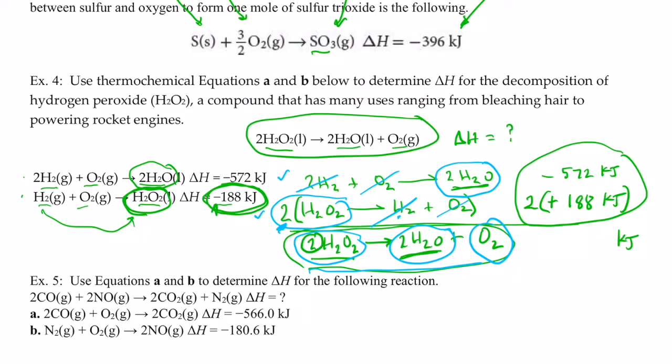So let's get our calculators out and add these two together. We have negative 572, and we're going to add to it two times positive 188. And when I do that, I end up with a negative 196 kilojoules for that reaction. So the heat of the reaction that I was after is negative 196 kilojoules. And that would be the heat for the decomposition of two H2O2s to two waters and an oxygen gas.